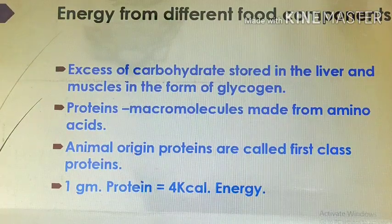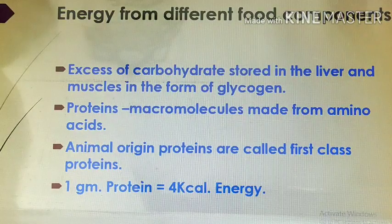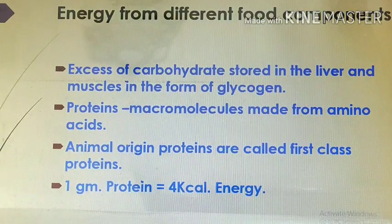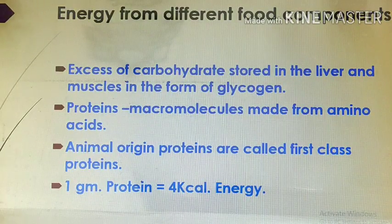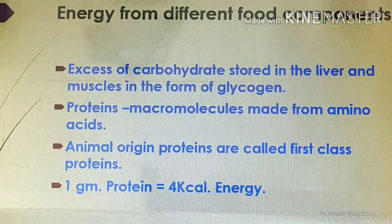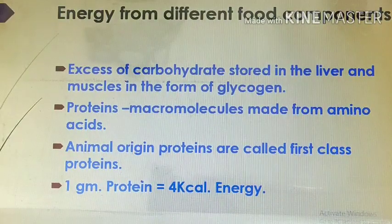Proteins are macromolecules made up of amino acids. Through our diet we get protein from plants as well as from animals. In pulses, protein is present, and from animal meat or animal flesh, the proteins obtained are called first-class proteins. All the proteins we get from animals are called first-class proteins, and these proteins are also a rich source of energy.